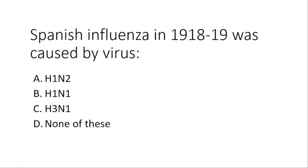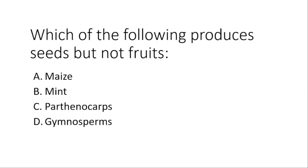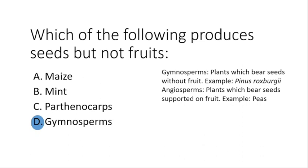Spanish influenza in 1918 to 1919 was caused by virus H1N1. Which of the following produces seeds but not fruits? The correct answer is gymnosperms. A brief difference between gymnosperms and angiosperms is that gymnosperms do bear seeds but produce seeds without fruit — for example, pines. In angiosperms, seeds are supported on fruit; examples include peas.